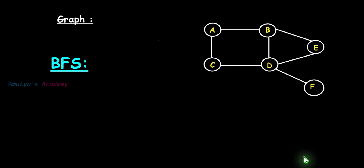Let's learn the BFS algorithm with an example. Here we have a connected undirected graph. To traverse this graph using BFS, first we need to choose a starting node. Like DFS, in BFS you can also choose any node as the starting node. Here, let's take A as the starting node.